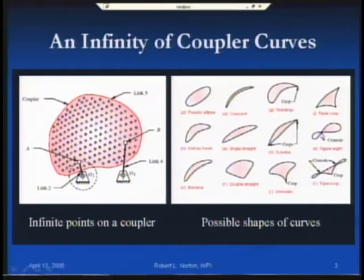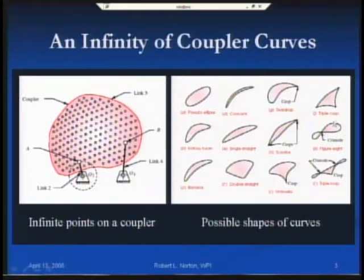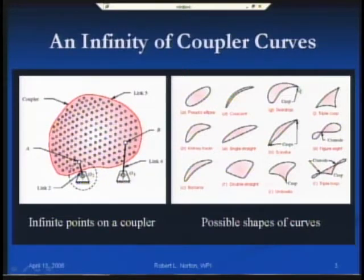Cusps and crunodes are sometimes termed double points. In the case of the crunode it has two slopes and two velocities depending on which direction you approach that point. The cusp is a point which has zero velocity instantaneously — as I traverse the curve I accelerate smoothly to zero velocity and then accelerate away in a slightly different direction.